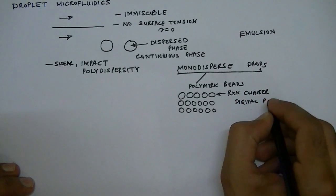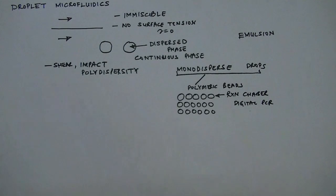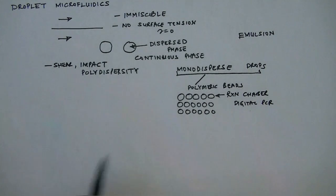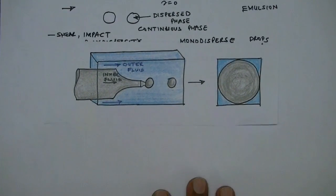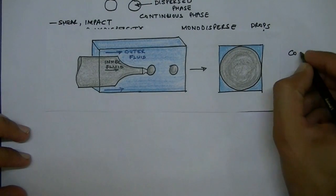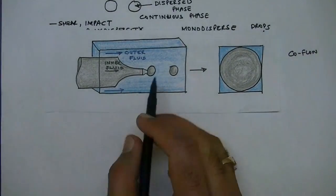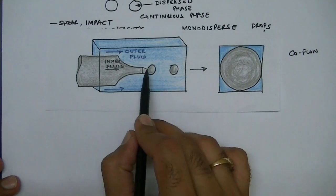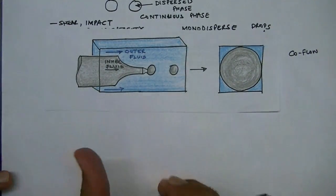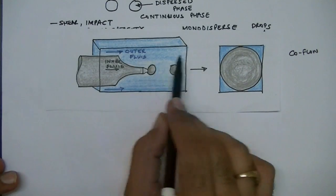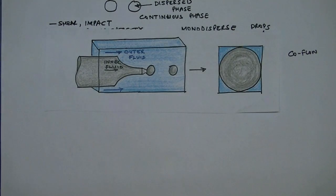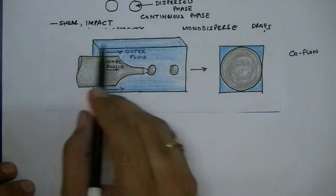You can also use monodisperse droplets for techniques such as digital PCR. The applications of monodisperse droplets are immense, but here we will discuss how we can use a microfluidic device to generate these droplets. We are going to look at a very simple device based on two streams flowing along with each other — this is called a co-flow device. The idea is that if we have water flowing surrounded by an oil stream, we will have formation of droplets.